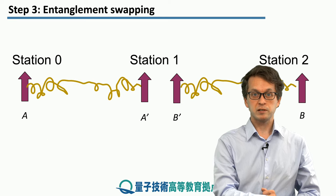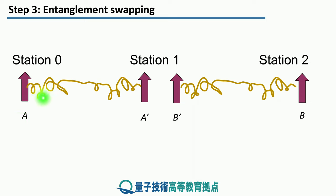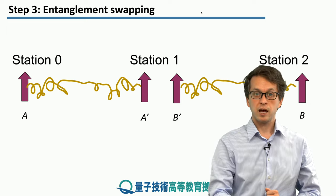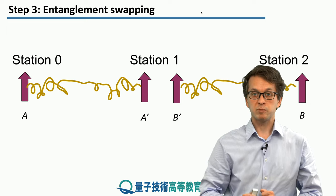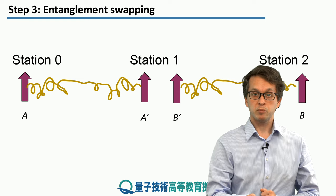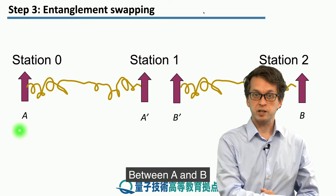Let's label the qubits as follows. Station 0 has qubit A. Station 1 has qubit A', which is entangled with A, and qubit B', which is entangled with qubit B at station 2. The end goal is to establish a maximally entangled state between station 0 and station 2, meaning between qubits A and B.